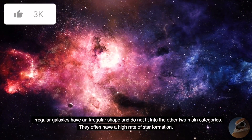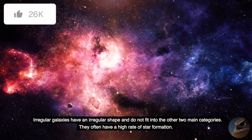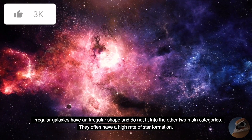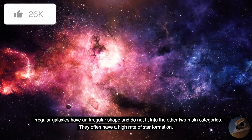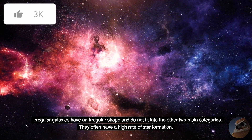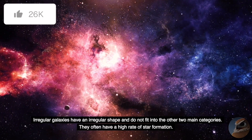Irregular galaxies have an irregular shape and do not fit into the other two main categories. They often have a high rate of star formation.